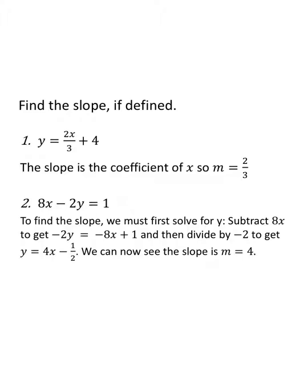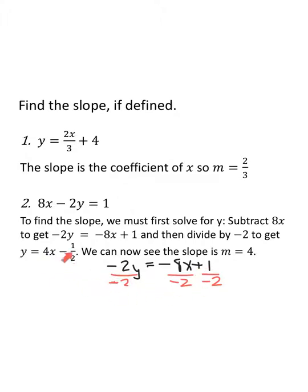Given eight x minus two y equals one, to find the slope we have to solve for y first. Subtract eight x from both sides: negative two y equals negative eight x plus one. Then divide every term by negative two. Negative two y over negative two is y. Negative eight x over negative two is positive four x. One over negative two is negative one half. Now that y is by itself, the slope is the coefficient of x: m equals four.